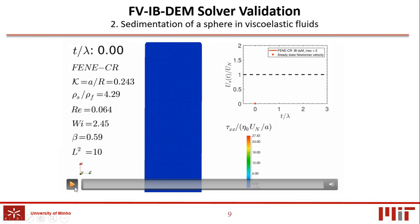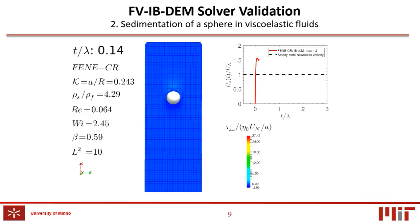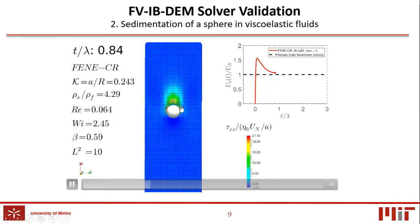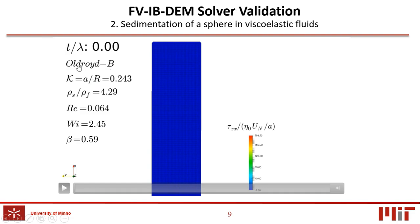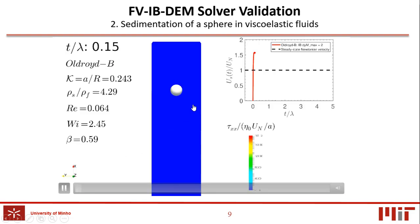In the animation, it is possible to see the particle movement along the tube's centerline, and the fluid normal stress field which is being generated. The dynamic mesh capabilities is also illustrated near the particle surface. It is possible to see that the width of the stress wake is larger for the Fene-CR model than the ones generated for the Oldroyd-B model, which causes a higher particle settling velocity.